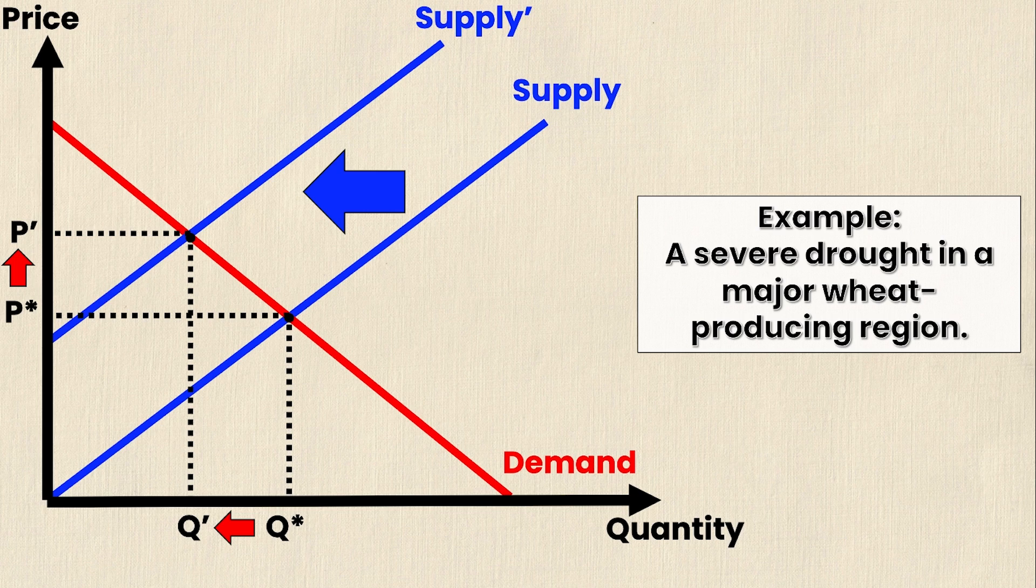Now you'll notice that p has increased and q has decreased and this will always be the case if supply shifts to the left and there is no change in demand. It does not matter the magnitude of the shift. If demand remains unchanged and supply decreases then price will always go up and quantity will always go down for the new equilibrium.